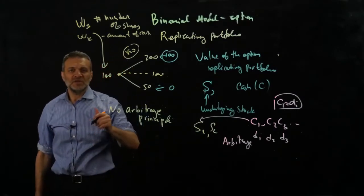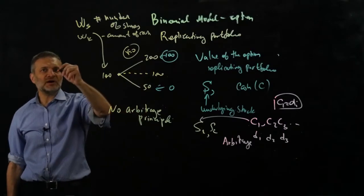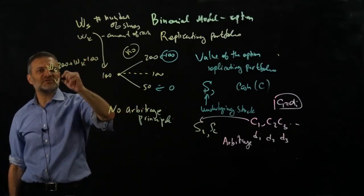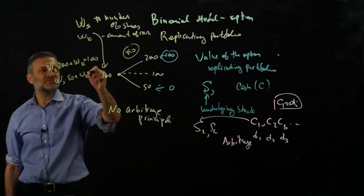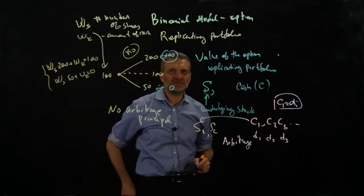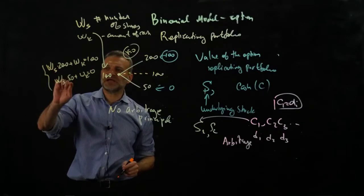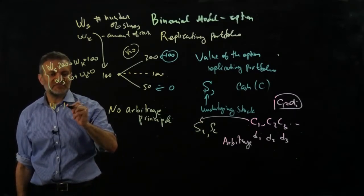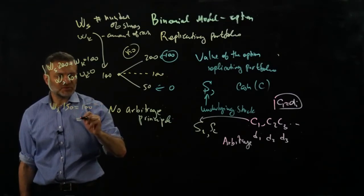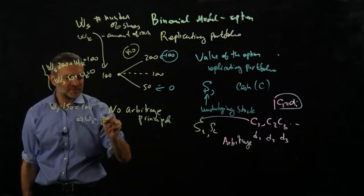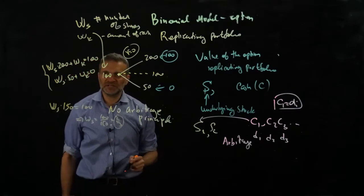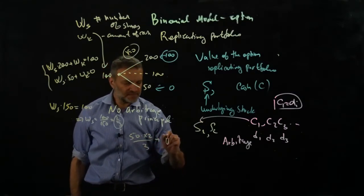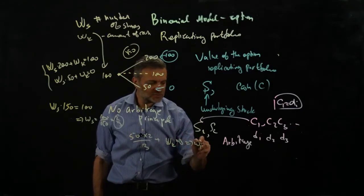You set up the following system of equations. In the good state of the world: ws × 200 + wk = 100. In the bad state of the world: ws × 50 + wk = 0. Subtracting the second from the first gives ws × 150 = 100, so ws = 100/150 = 2/3. Substituting back: 50 × (2/3) + wk = 0, so wk = −100/3.